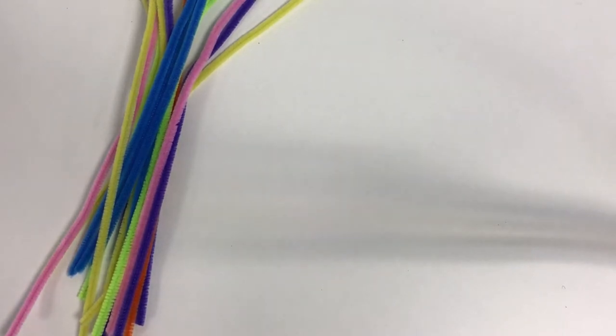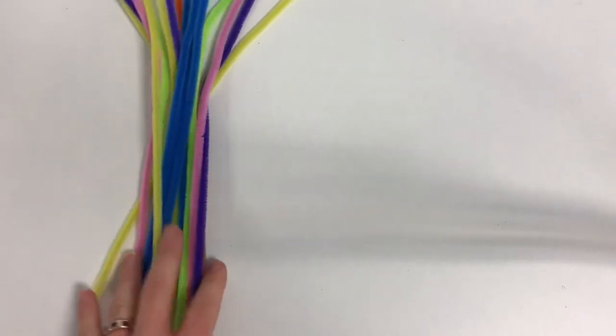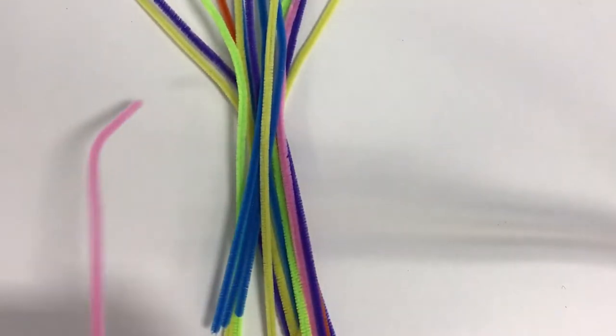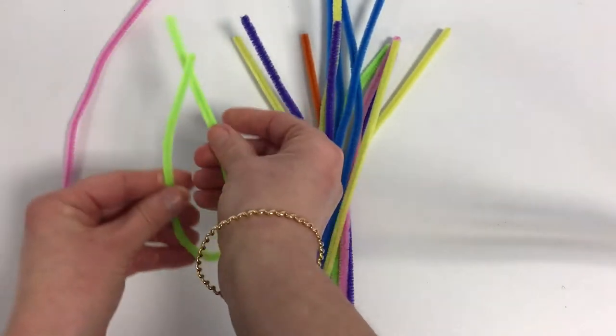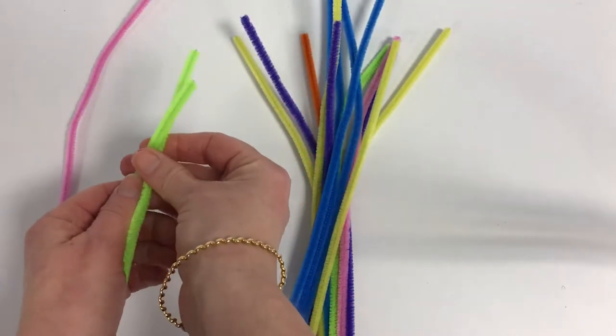To make this simple St Brigid's Cross you'll need 16 pipe cleaners. Keep one pipe cleaner aside and then fold all the others into half.